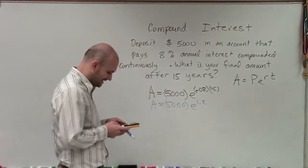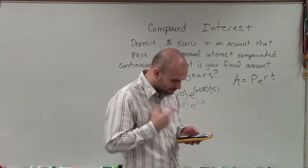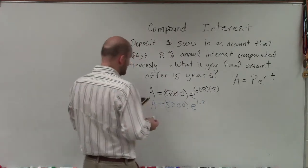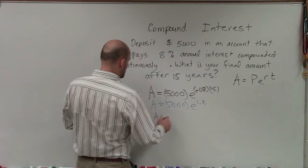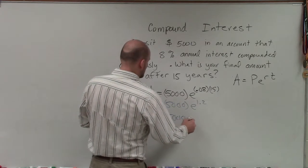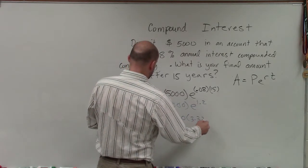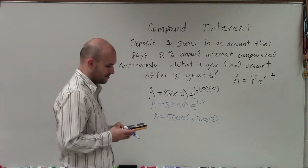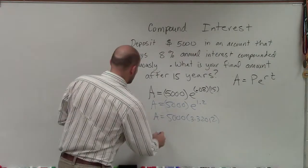Now, I know when I take my constant e and raise it to 1.2, I'm going to be left with 3.320, and I'll just round that out, 3.32012.